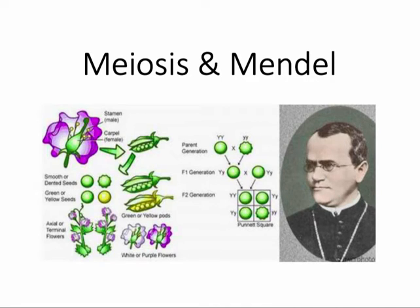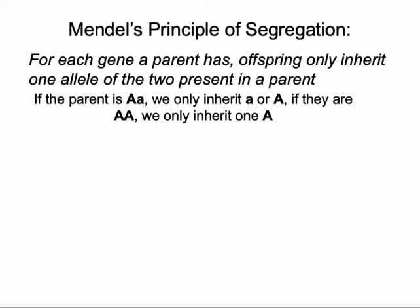Let's take a look at how meiosis is connected to Mendel's principles. Mendel proposed two main principles. The first is the principle of segregation. This principle states that for each gene that a parent has — having two copies or two versions of that gene — the offspring will only inherit one of those versions. As diploid organisms, we have two versions of every gene, and only one of those versions will get passed on to our offspring.